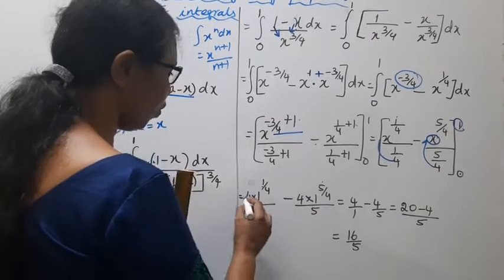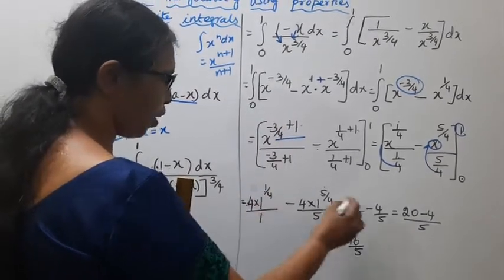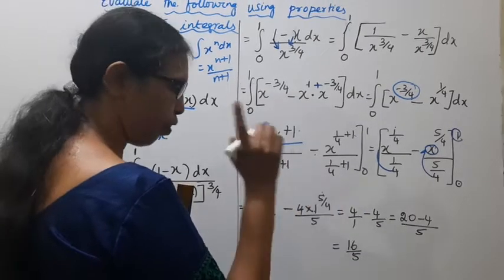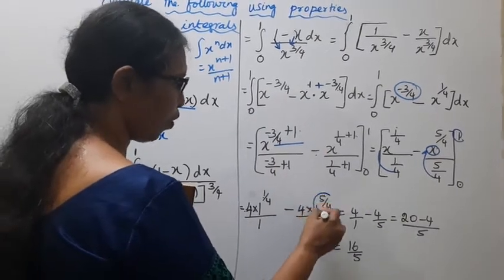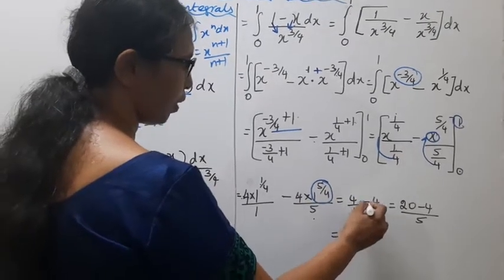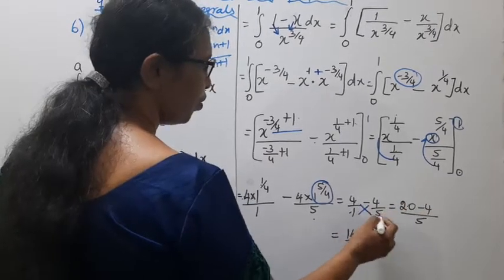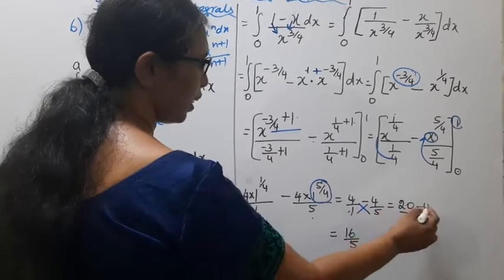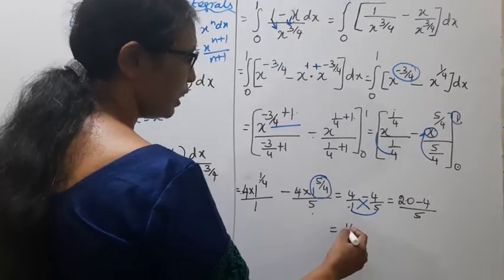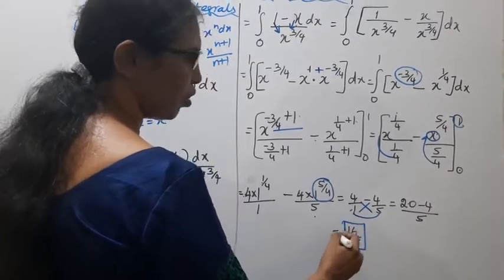Substituting limits: 4 into 1^(1/4) equals 4 by 1, minus (4/5) into 1^(5/4). Since 1^(1/4) equals 1 and 1^(5/4) equals 1, we get 4 minus 4 by 5. Cross multiplying: 5 times 4 equals 20, minus 4, divided by 5. So 20 minus 4 equals 16, and the answer is 16 by 5.